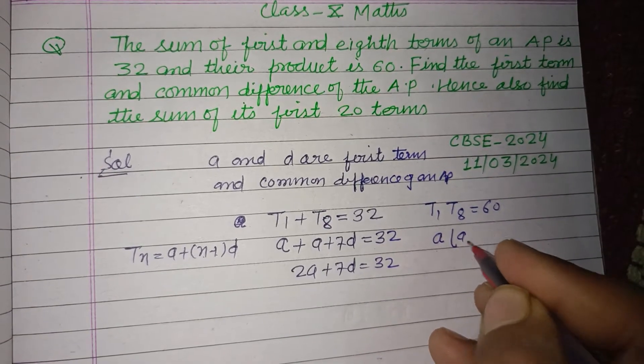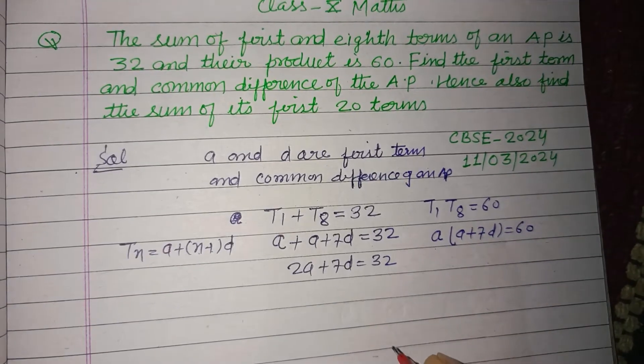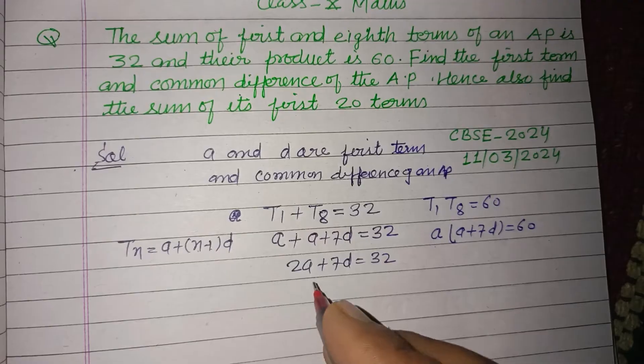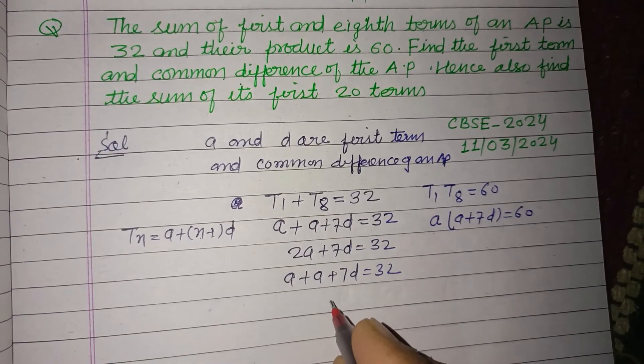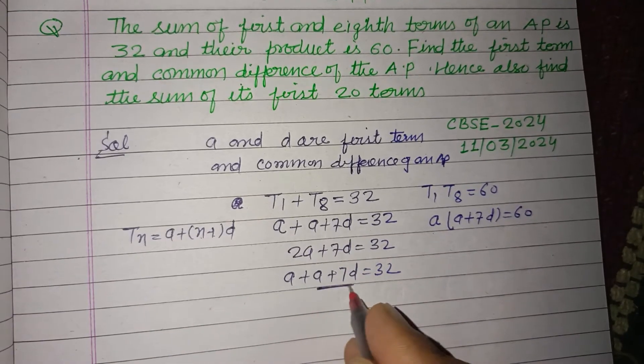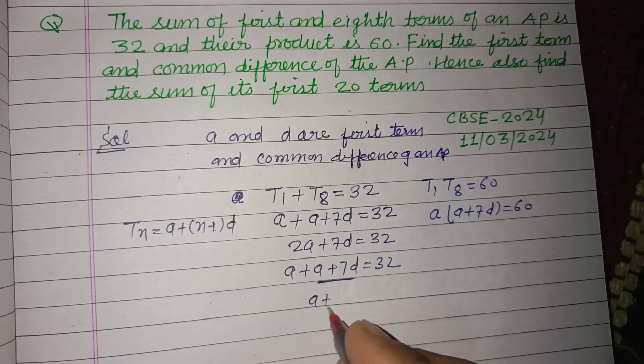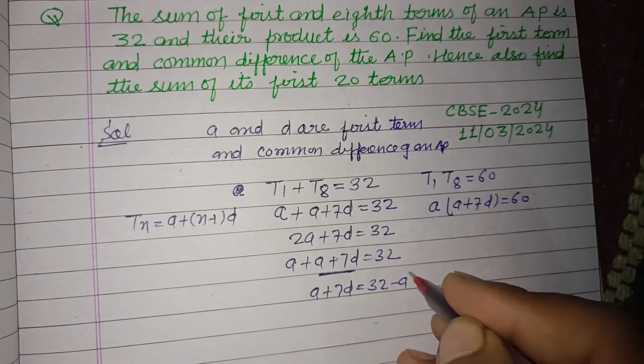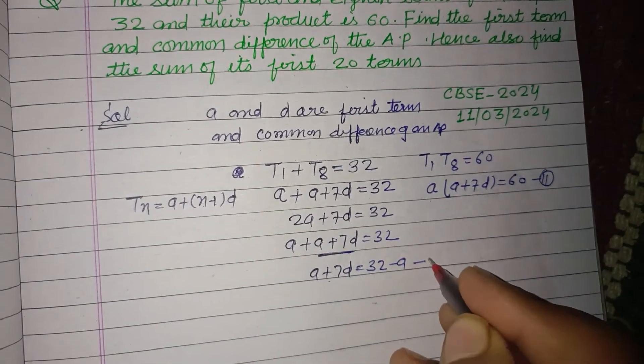Now product of these, so a1 is a and a8 is a plus 7d, that is 60. From here a plus a plus 7d equals 32, so a plus 7d equals 32 minus a.